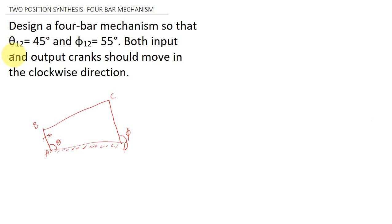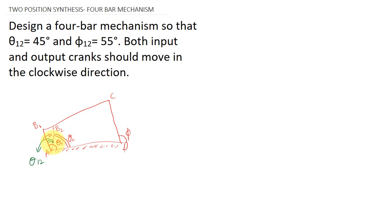In the question, it is given that theta12. So what is theta12? Let AB1 be the first position of the crank, and at that time the angle be theta1. After a particular time, this crank AB1 will move to another position, B2. At that time, you have got another angle, that is theta2. The difference between these two angles, theta1 and theta2, is actually theta12.